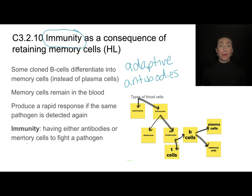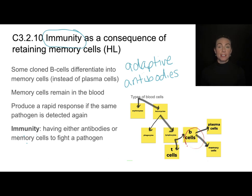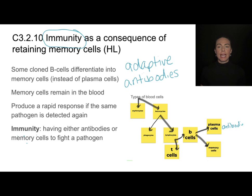Let's do a quick review of how we get antibodies. First, a pathogen is going to be engulfed by a phagocyte and the antigen is going to be presented on the outside of that phagocyte. Antigen presentation activates T cells, and these T cells in turn find and activate the correct B cell capable of producing an antibody specific to that pathogen. These B cells clone themselves via mitosis many times and then differentiate — some into plasma cells, which are the cells that produce the antibodies.